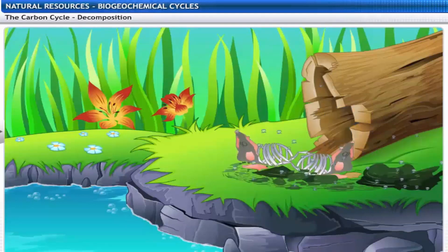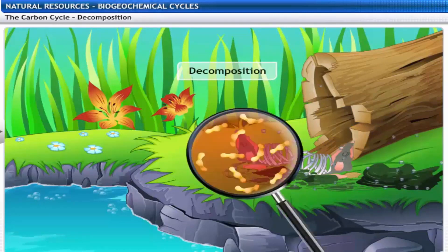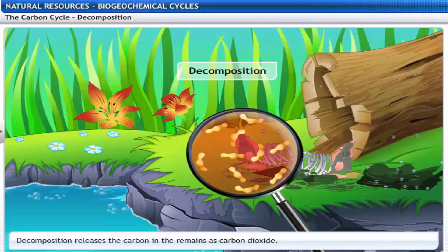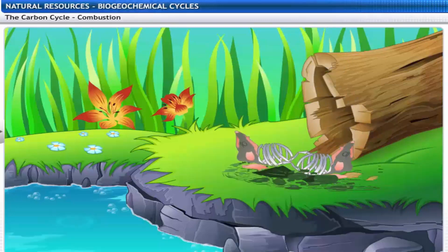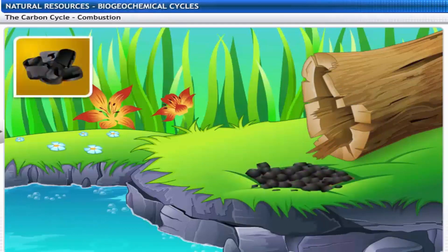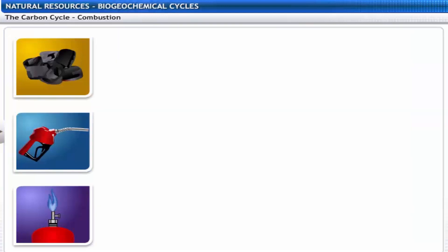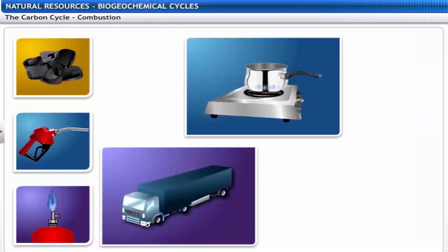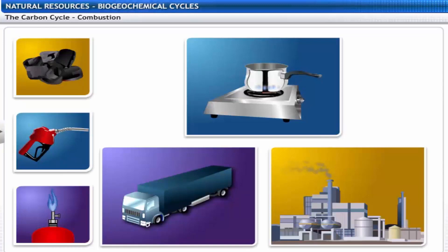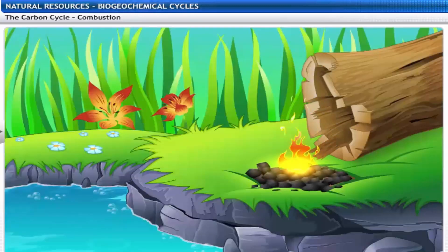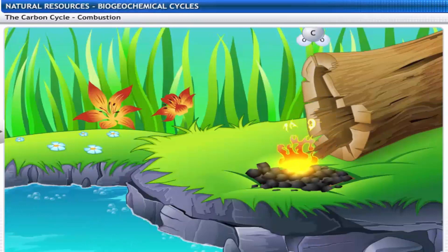Dead plants and animals are decomposed by fungi and bacteria. This decomposition releases the carbon in the remains as carbon dioxide. Dead plant and animal remains in the soil are converted into coal, petroleum and natural gas, better known as fossil fuels. These fuels are used for cooking, transportation and industrial processes. On burning these fuels, carbon dioxide is released into the atmosphere.